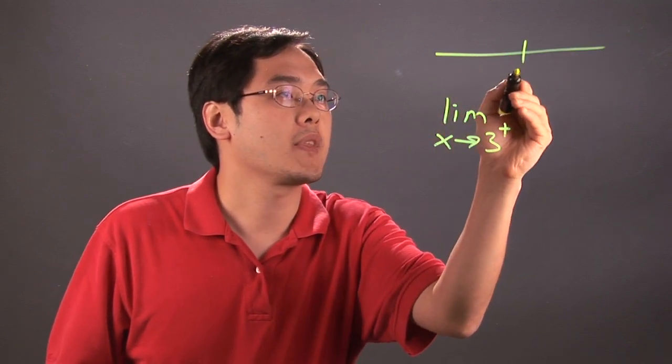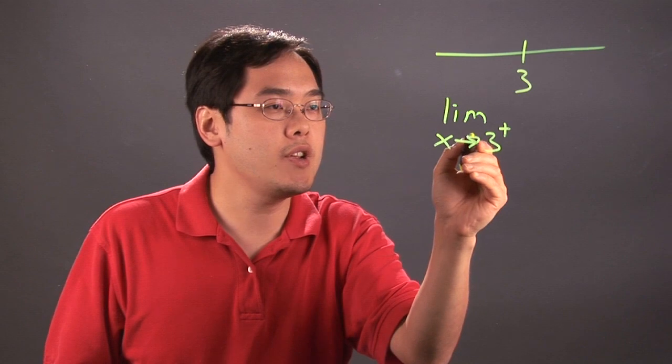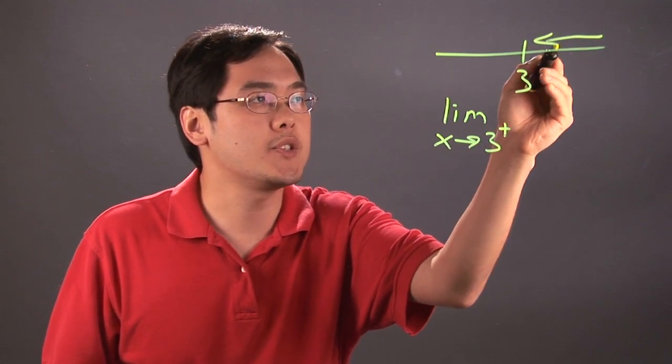From a number line perspective, if you have the number 3 there, approaching 3 from the right means you're approaching 3 from this direction.